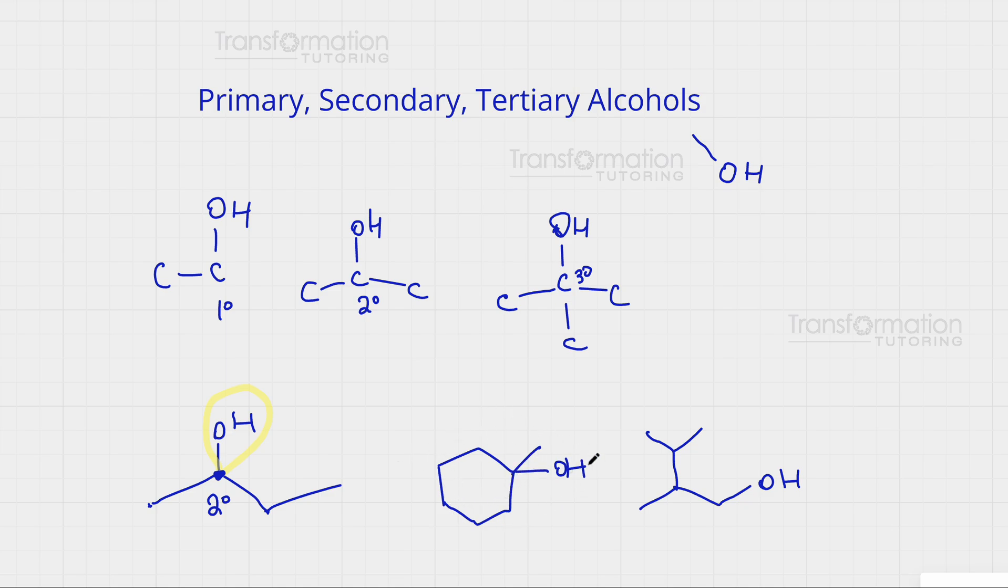Going to the next example, I find my OH group. It's attached to this carbon, and again we ask ourselves, how many carbons is this carbon attached to? This is actually one, two, three. It's attached to three carbons. This is a tertiary alcohol.